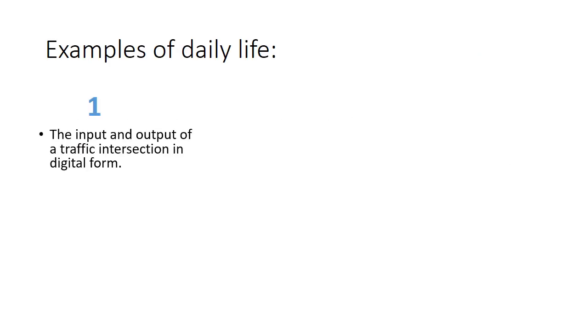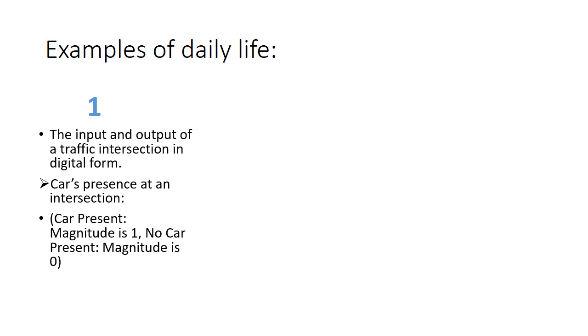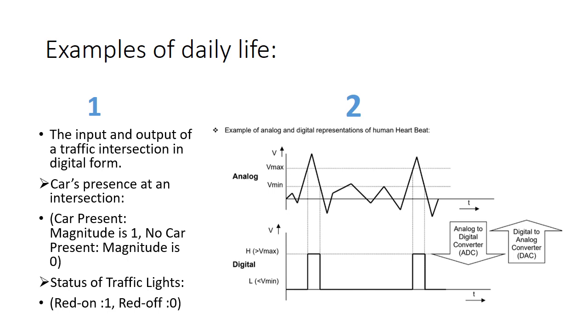Examples from our daily life: the input and output of a traffic intersection is in digital form. Car's presence at an intersection - car present, magnitude is one; no car present, magnitude is zero. Status of traffic lights: red on, one; red off, zero. Very simple. But on the other hand, if we see the data of our heartbeat in analog form, you can see there are many fluctuations which need to be eliminated. But if we convert this data into digital, we can easily tell when the values are low and when the values are high.